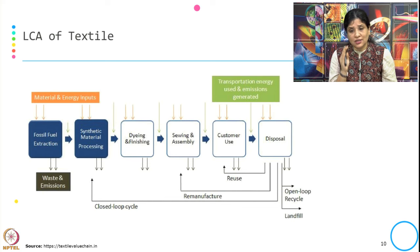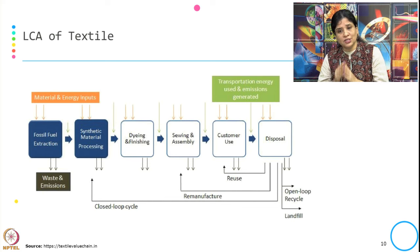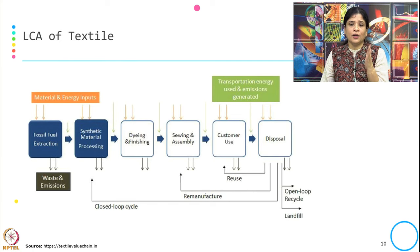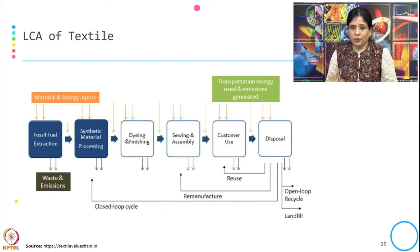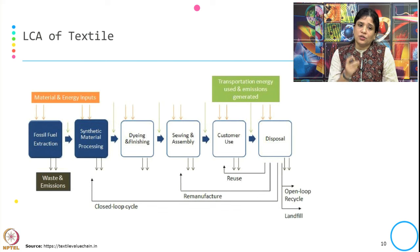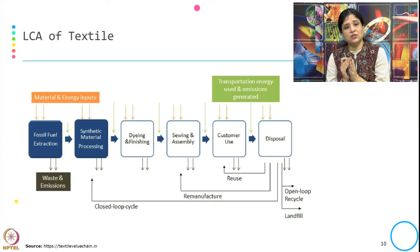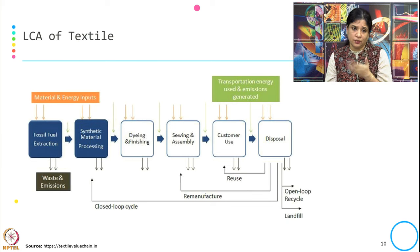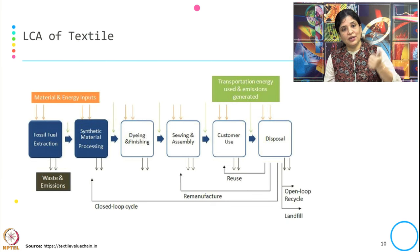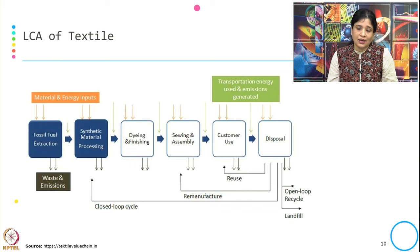An open loop cycle is when disposal goes to landfill or open-loop recycling. In a closed loop cycle, whatever is disposed gets recycled and goes back into the product life cycle. In some cases, not everything can be recycled back — some goes to landfill and some to open-loop recycling. This illustrates how the product life cycle works: what are the inputs, what are the outcomes, and how material can be reused, recycled, and brought back.